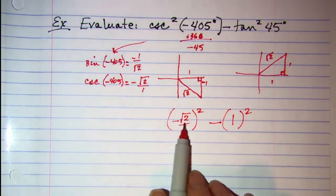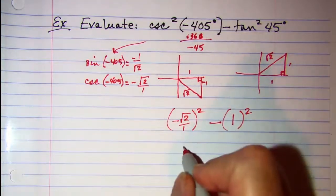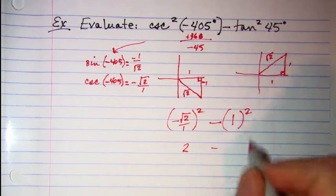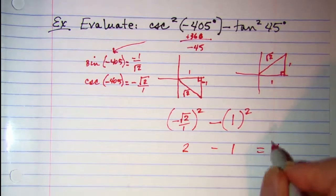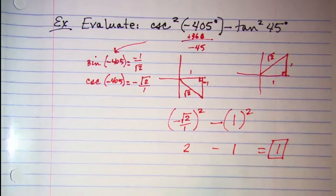When I square negative √2, I get 2, and square 1, I get 1. So I get 1 as the value.